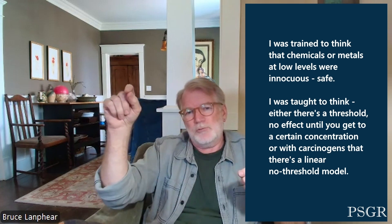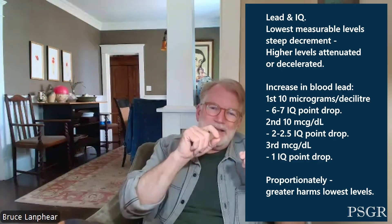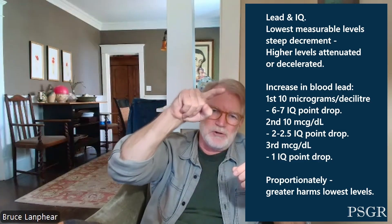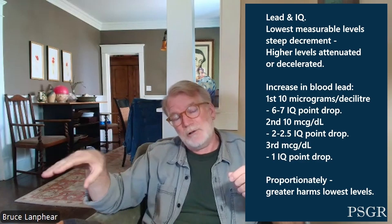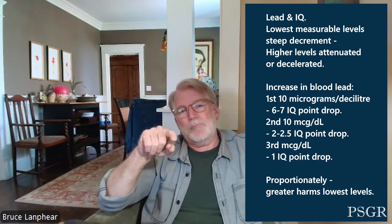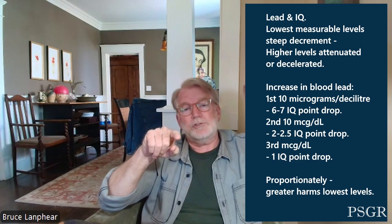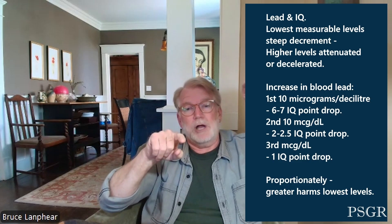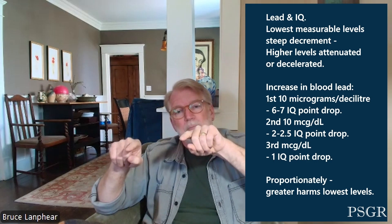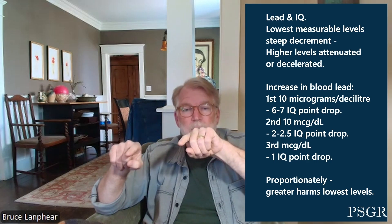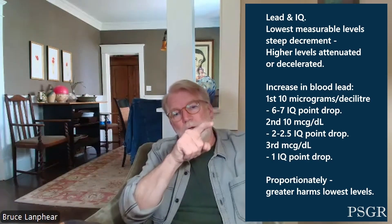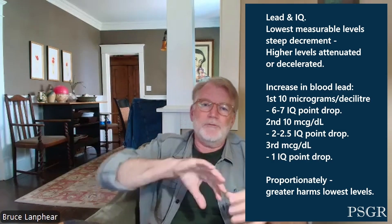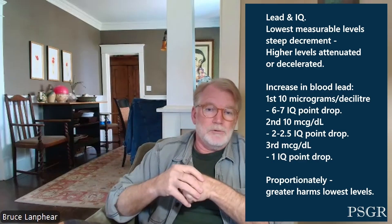The second time I saw it, we were looking at what happens as blood lead levels increase in a group of children. We saw that beginning at the lowest measurable levels there was a steep decrement, and then at higher levels it attenuated or decelerated. The first 10 microgram per deciliter increase in blood lead was associated with about a 6–7 IQ point drop; the second 10 µg/dL increase was about a 2–2.5 IQ point drop; and the third was about a 1 IQ point drop. So proportionately we saw greater harms at the lowest levels — that's called a decelerating dose-response relationship.